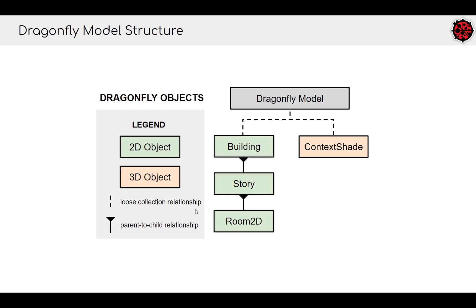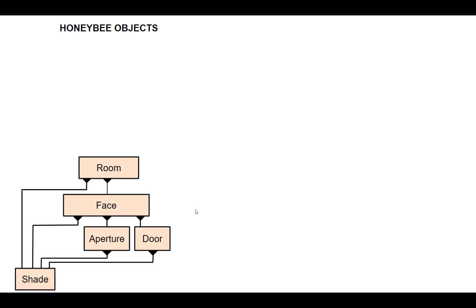This is essentially how Dragonfly models are structured. Comparing this to Honeybee, the coarsest object you can work with in Honeybee is a room — there's no object to represent a story or a building. That's why Honeybee is good for representing detailed individual buildings but isn't really designed to handle the urban scale that we're doing with Dragonfly.